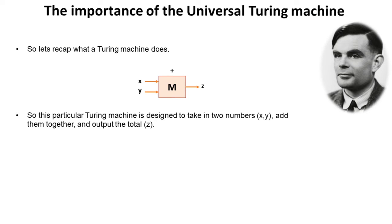So let's just recap what a Turing machine does. This particular Turing machine shown here is designed to take in two numbers x and y, add them together, and output the total z.